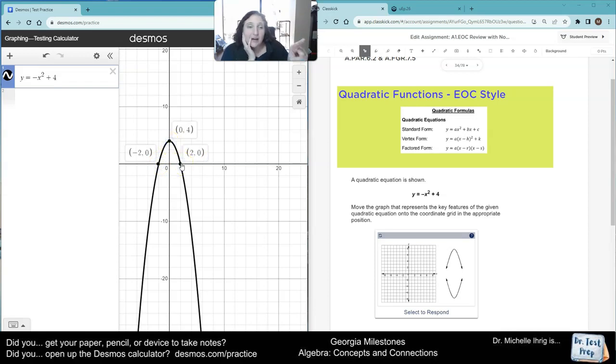Our important points are negative 2, 0, 2, 0, and 0, 4. So, going over here, I'm going to make sure I follow my piece. Here's negative 2, 0, here's positive 2, 0, and then we need 0, 4.